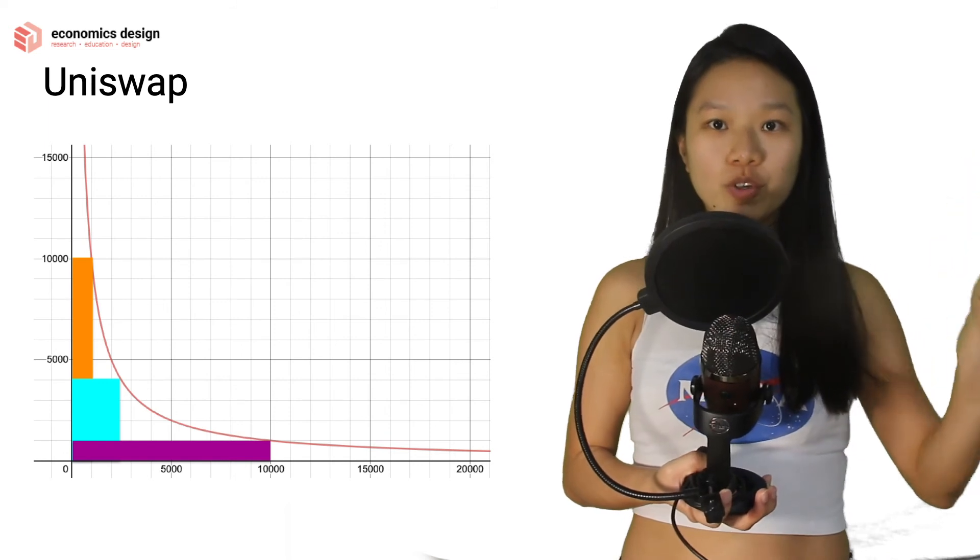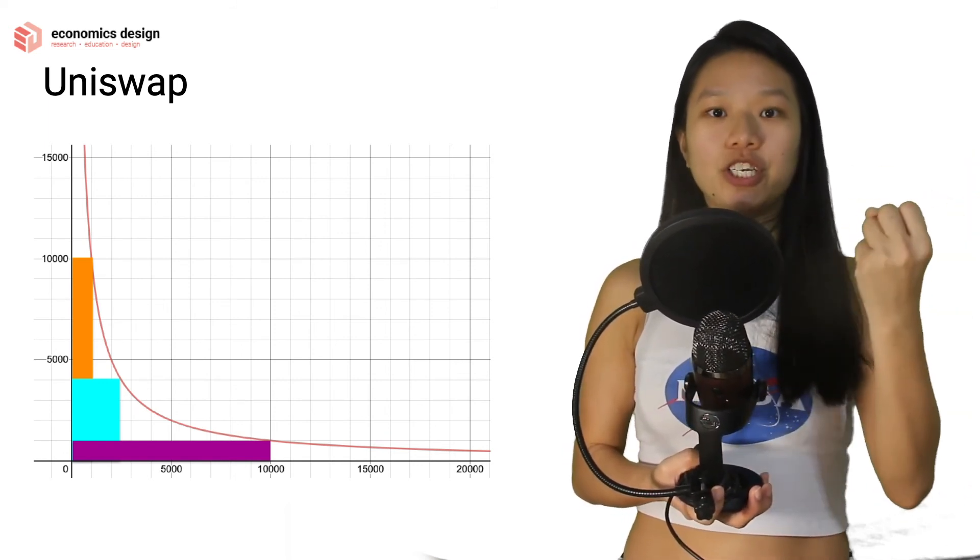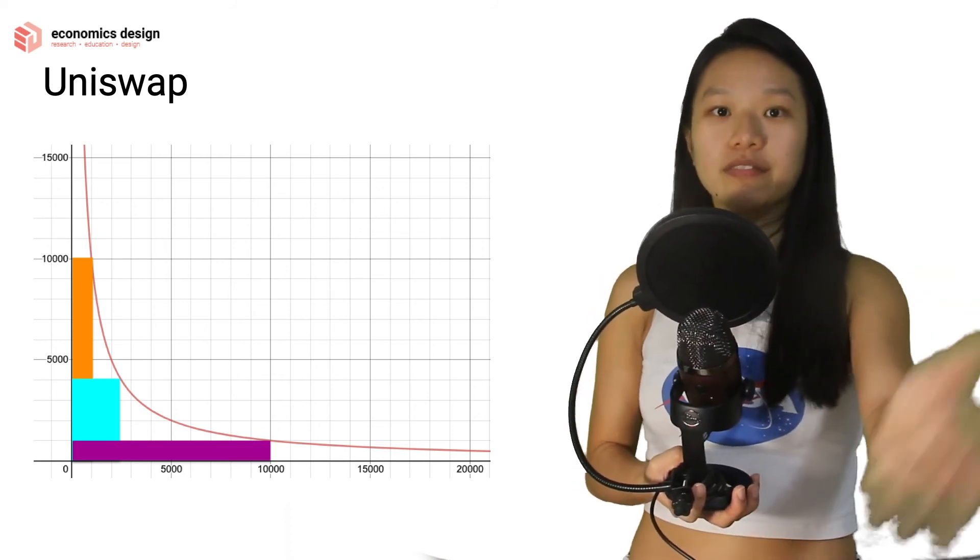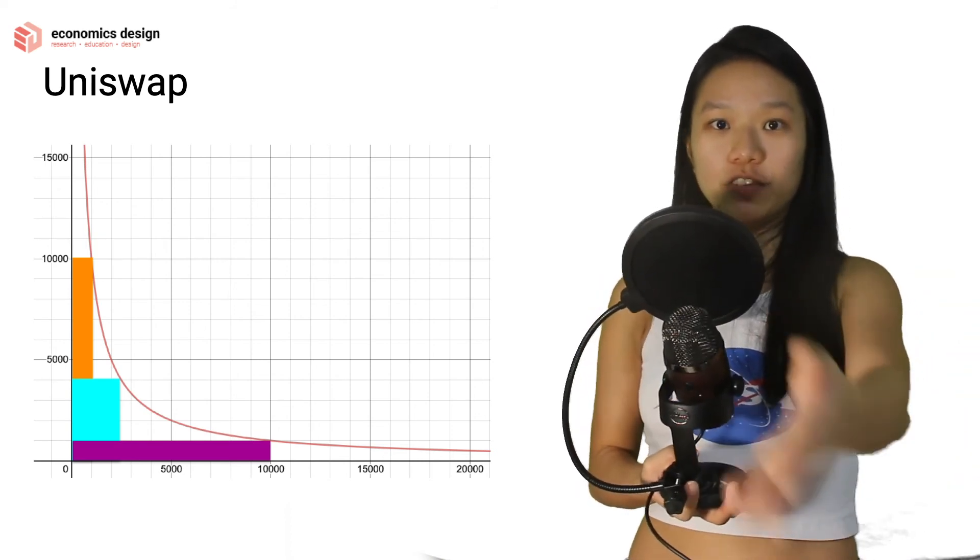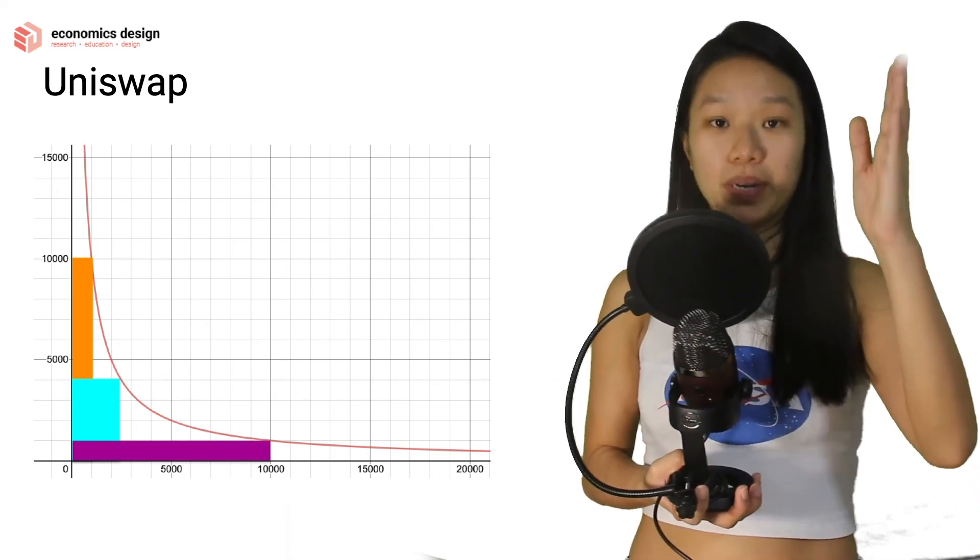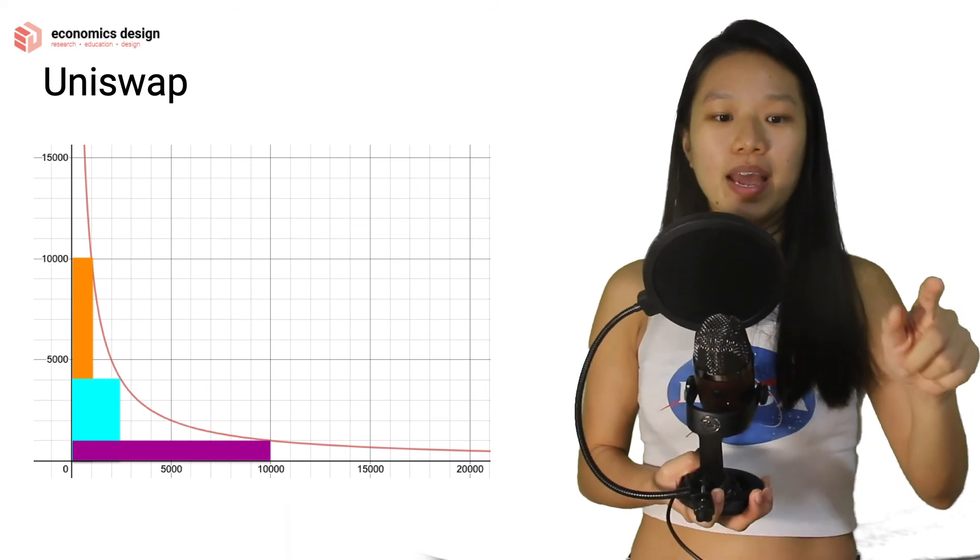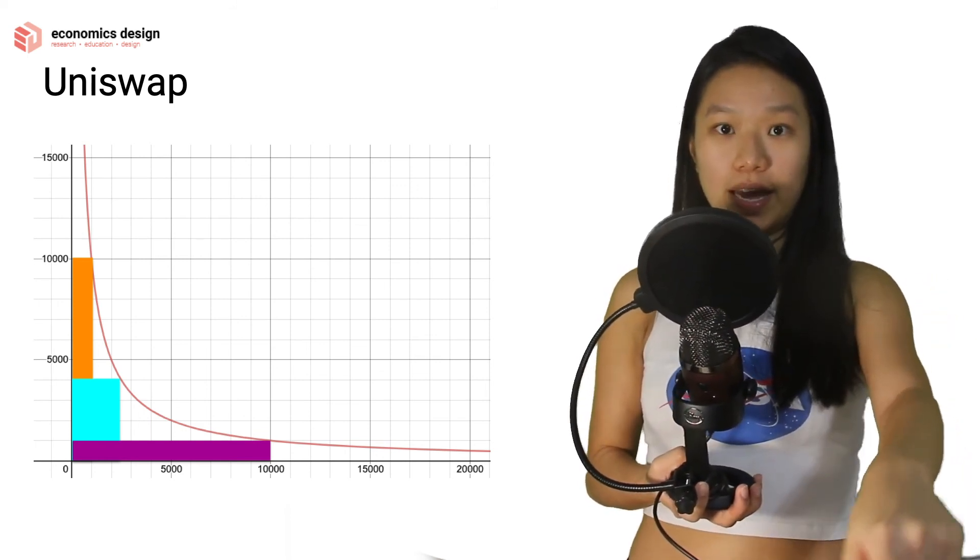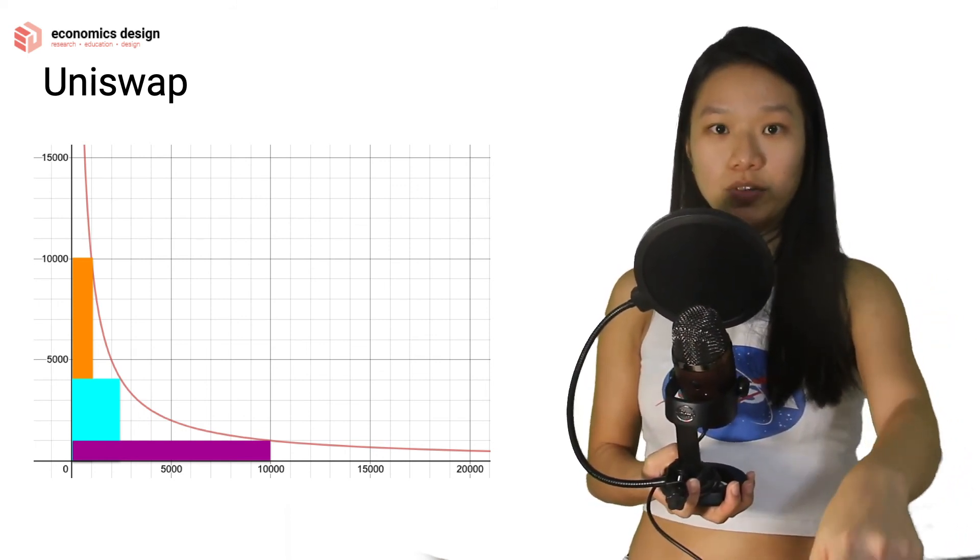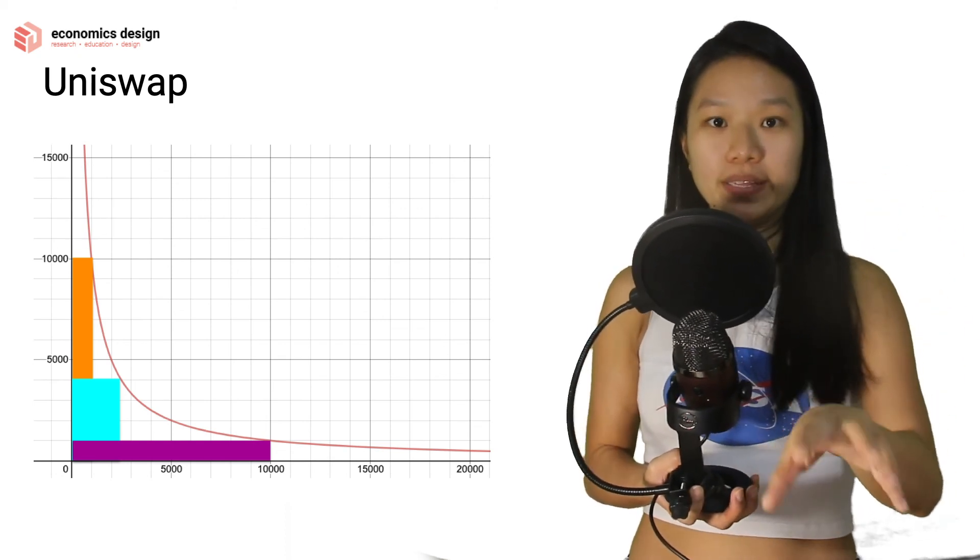So the area under the curve will still be the same because nothing gets destroyed or created. Everything, whenever you change from token A to token B or token B to token A, the amount change is the same, provided the curve doesn't shift, of course. If the curve shifts because there's additional liquidity, then the area under the curve will be different. But if everything stays the same, the curve is like that, and if you change for any amount, then the sum of the amount changed will be the same.